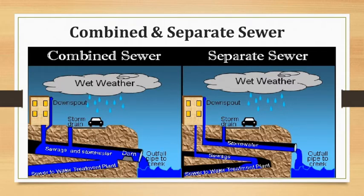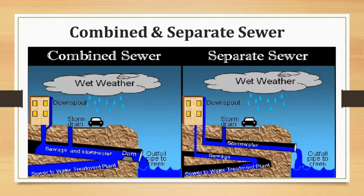We already discussed the difference between the conservancy system and the water carriage system. Considering the hygienic aspect, the water carriage system is very hygienic while the conservancy system is very unhygienic. Regarding foul smell, the water carriage system has no foul smell and no chances of putrification, whereas the conservancy system has a lot of foul smell due to putrification.